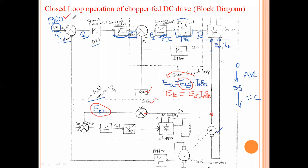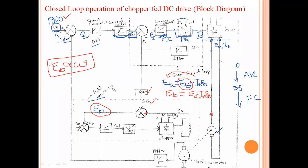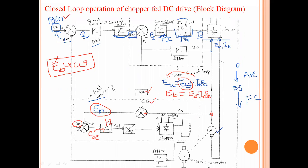For 1800 RPM, E_B will be different because E_B is directly proportional to omega — if speed changes, E_B changes. So a reference back EMF value is set for the required speed. The actual back EMF is compared with this reference back EMF, and a back EMF error is generated. This back EMF error is regulated by a PI controller, also called the field controller.